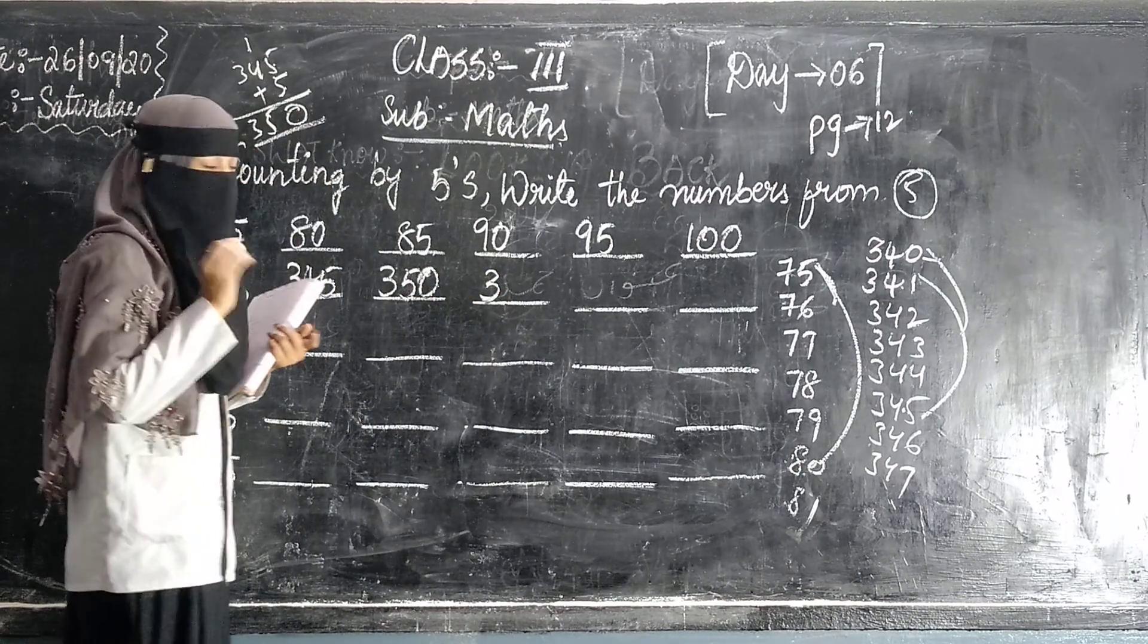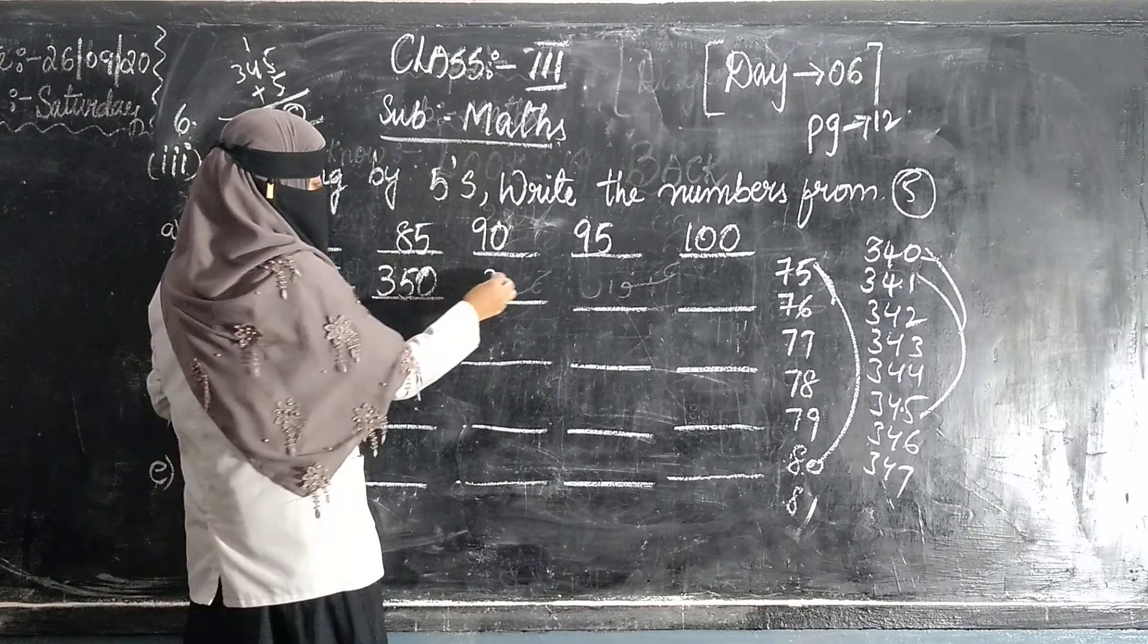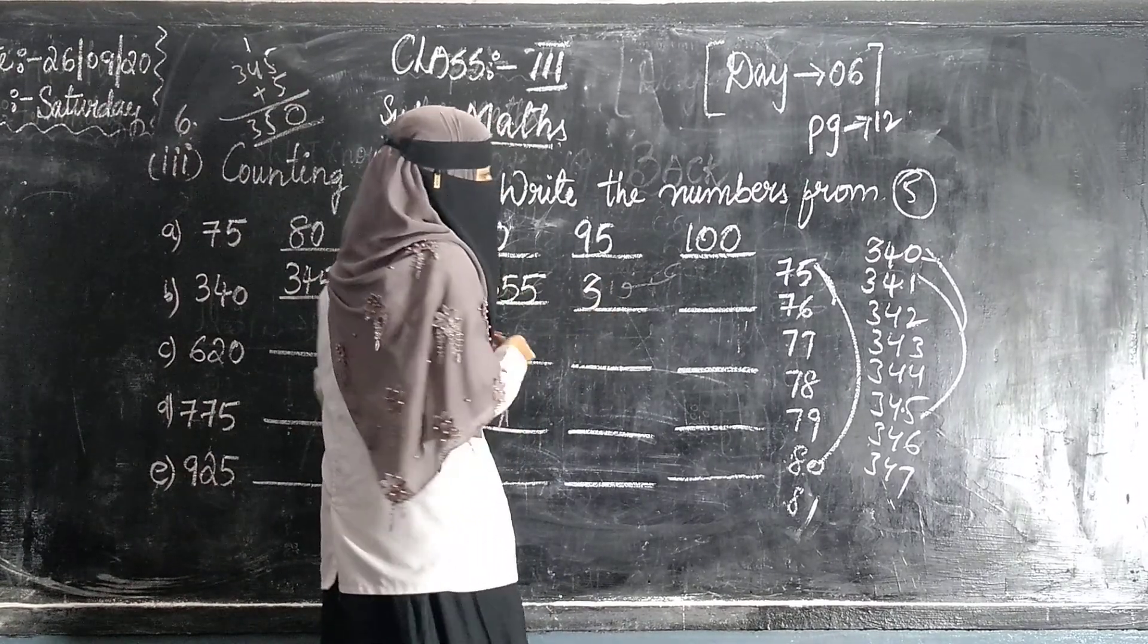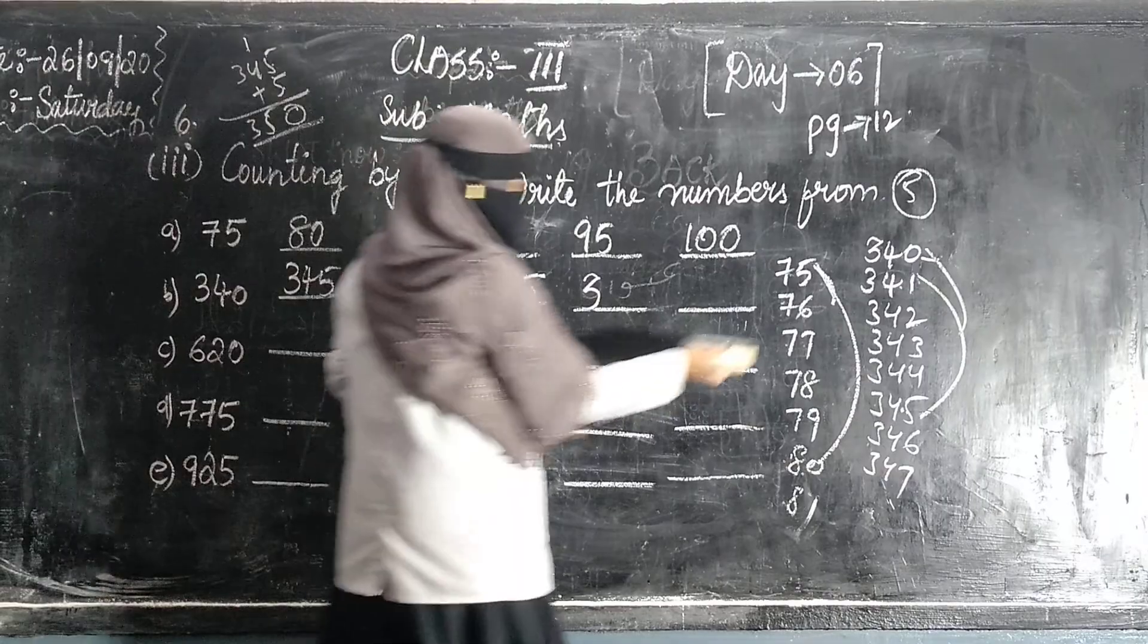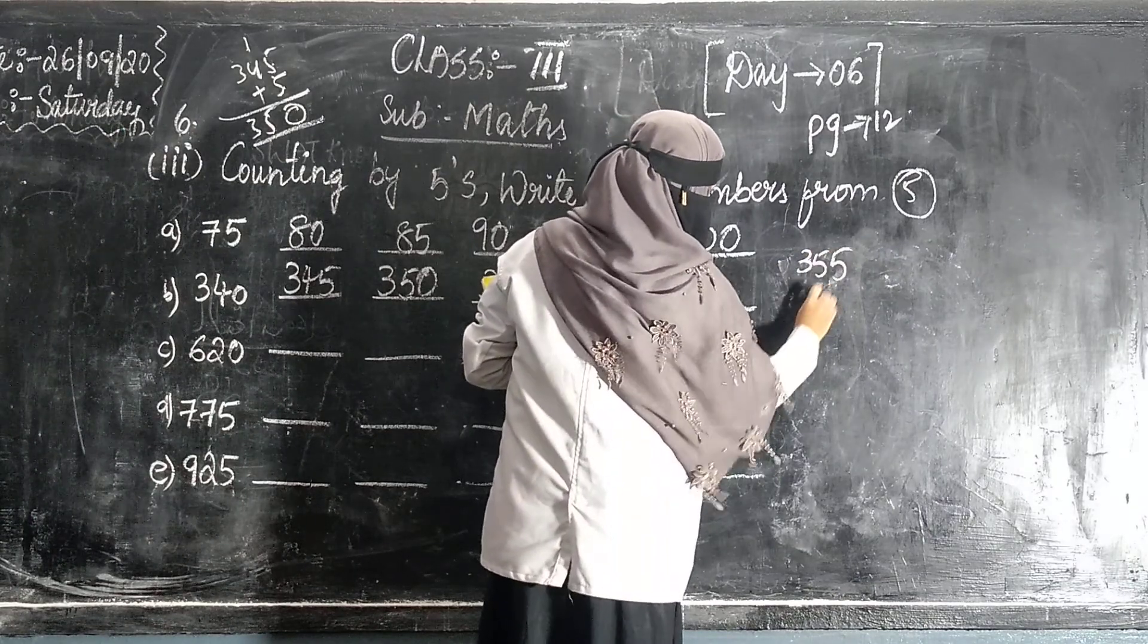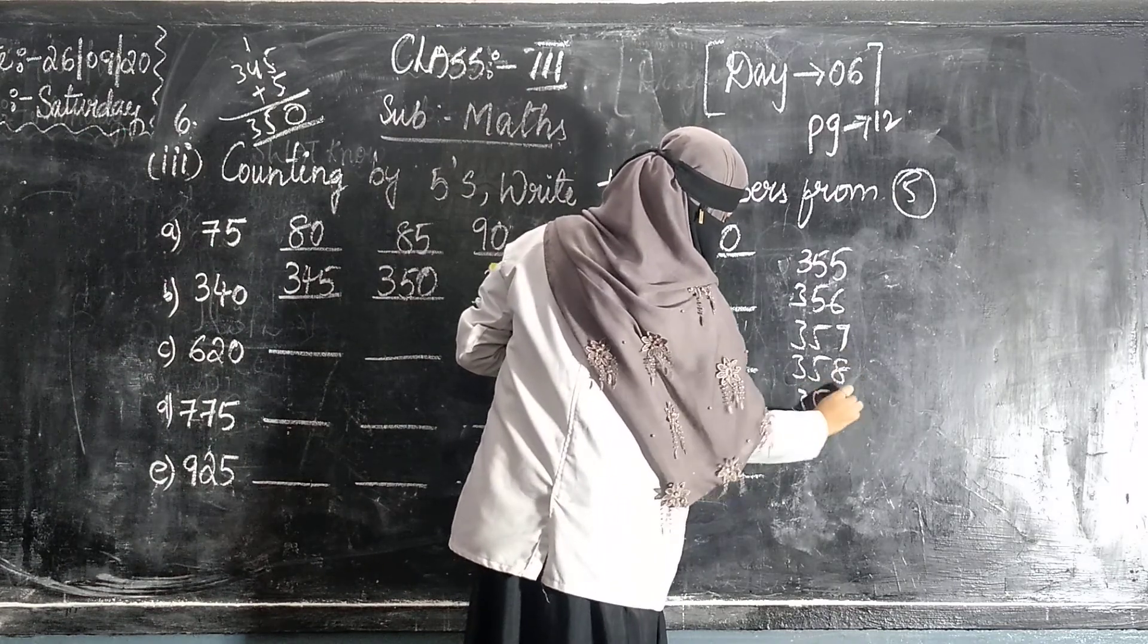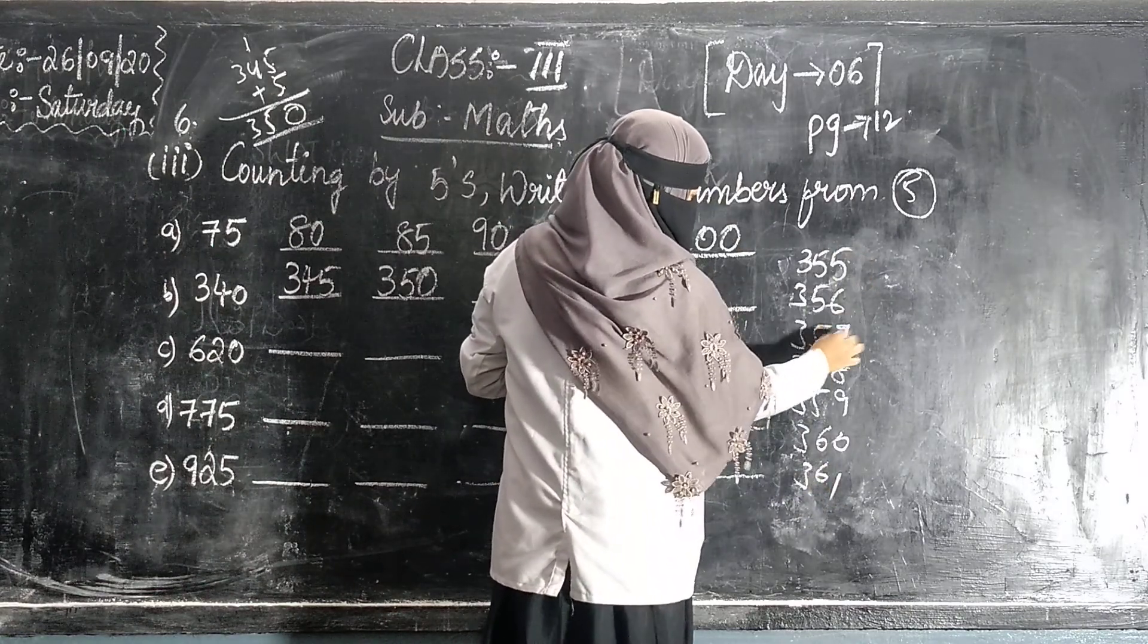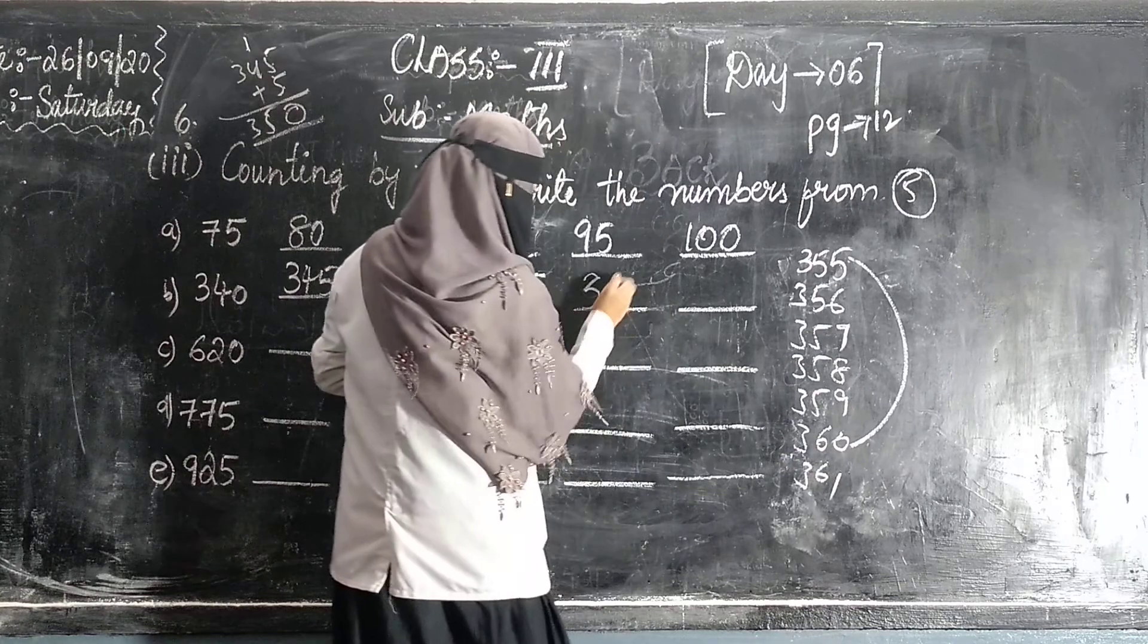350. Next 355. So we now skip 5 numbers. 355. 1, 2, 3, 4, 5. So skip the number: 1, 2, 3, 4. Answer is 360.